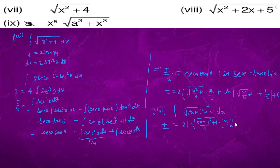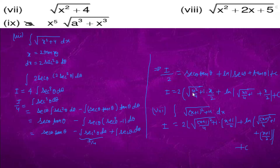The answer becomes 2 · √((x+1)²/4 + 1) · (x+1)/2 + ln|√((x+1)²/4 + 1) + (x+1)/2| + C, simply replacing x with x + 1 throughout the Q7 result. Questions 9 and 10 will be done in the next video.